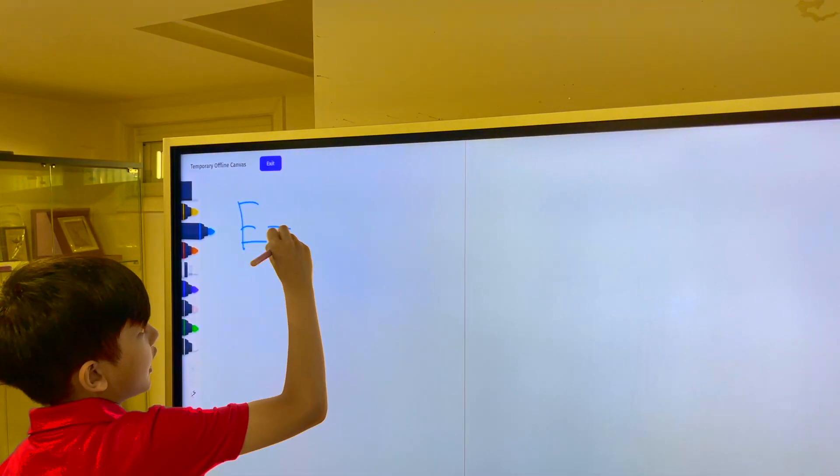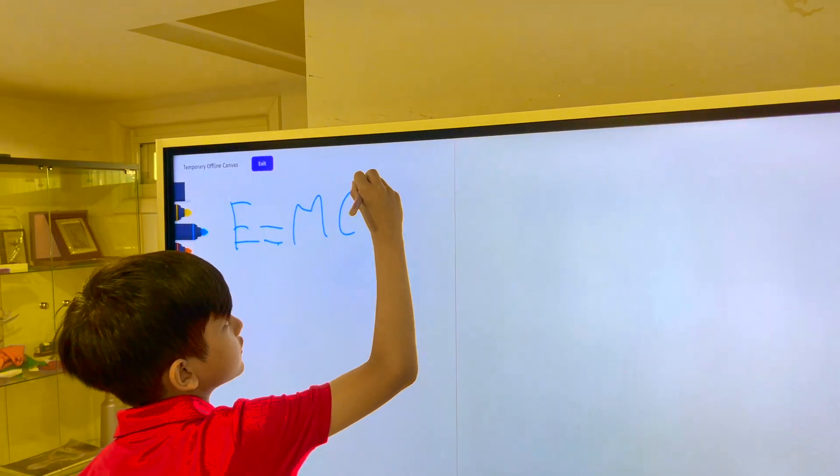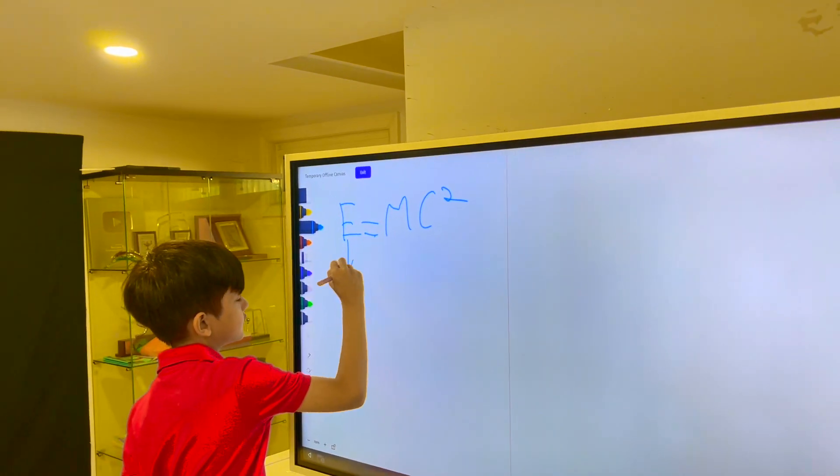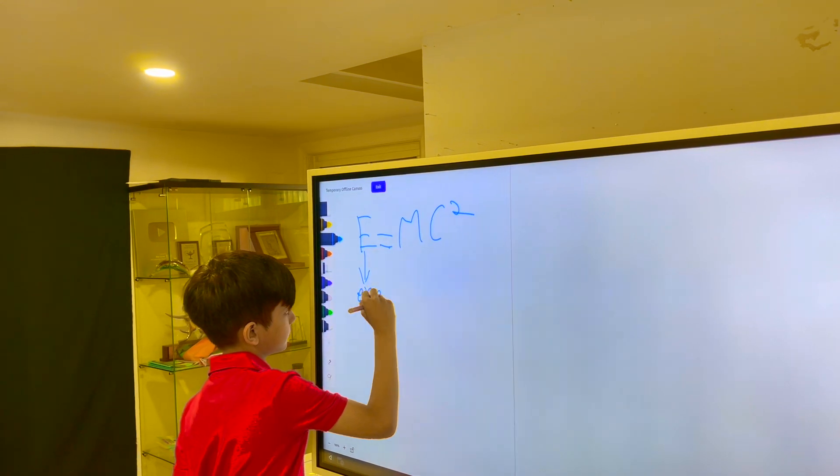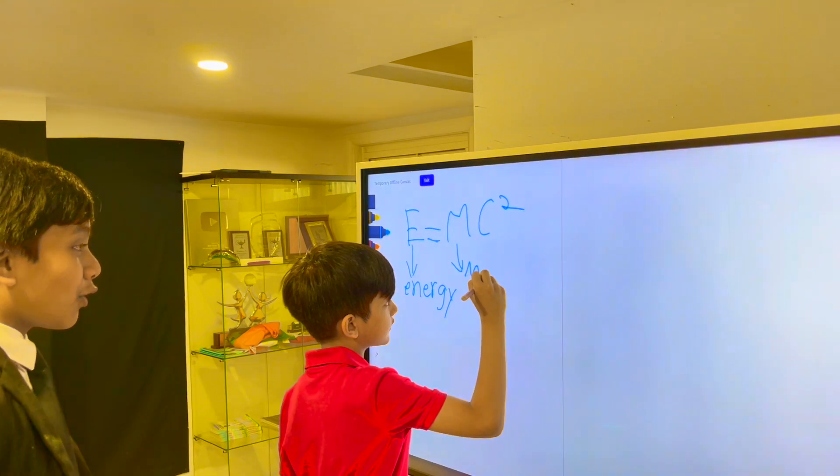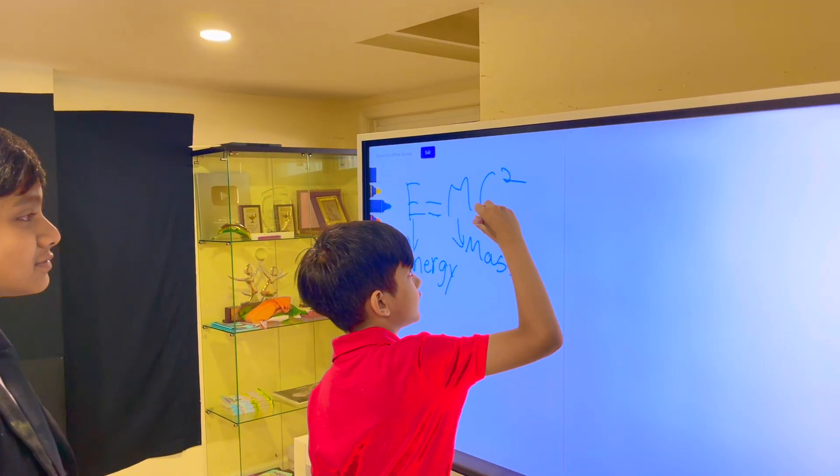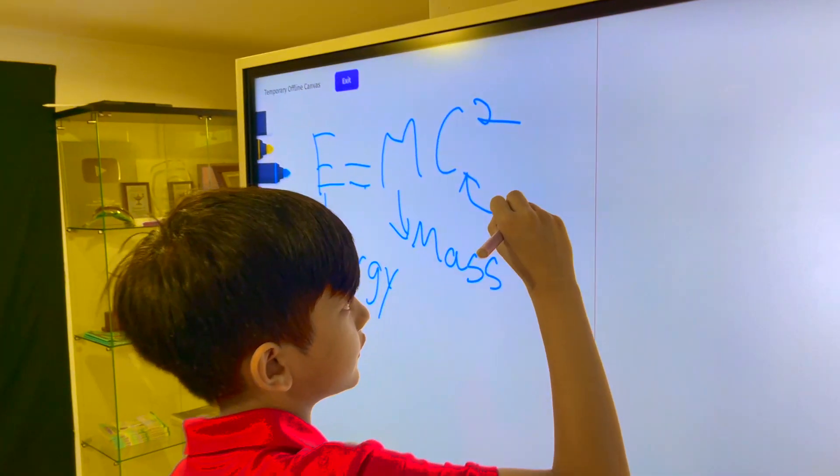Today I'm going to teach you E equals mc squared, which was discovered by Albert Einstein. E is equal to mc squared. So E stands for energy, and m is for mass, and c is for speed of light.